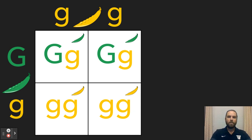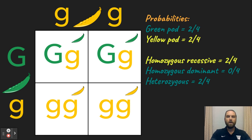Now the probabilities that you're looking at here, I could ask you, what's the probability that you get a plant that has a green pod? Well, you'd count one, two out of the four. What's the probability that you get a yellow pod? Again, two out of four.